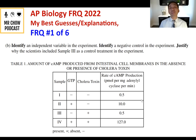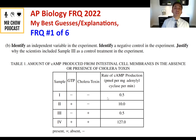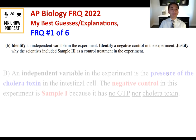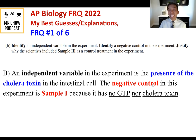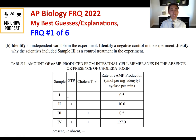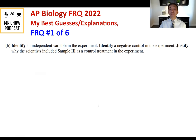Question 1B: Identify an independent variable, a negative control, and justify why scientists include sample three as a control. The independent variable is the presence of cholera toxin in the intestinal cell. The negative control is sample one, because it has no GTP and no cholera toxin — nothing was added to it. The negative control is anything you don't add treatments to.